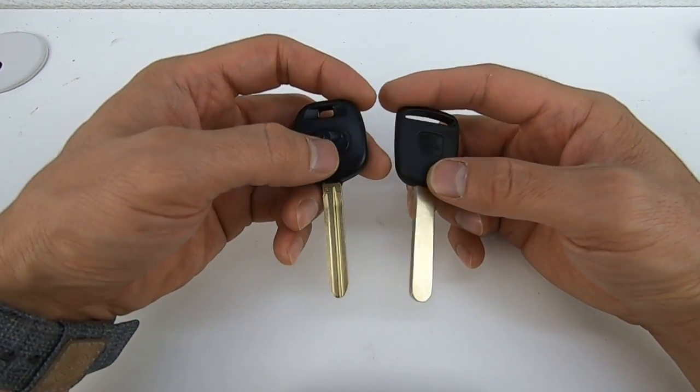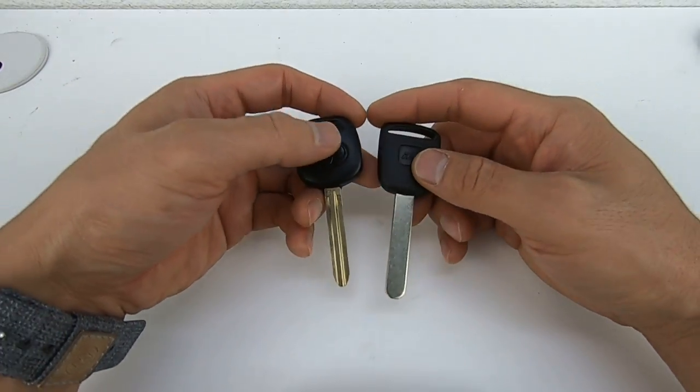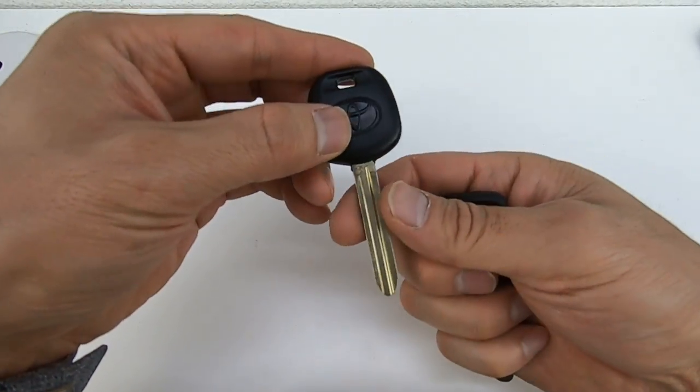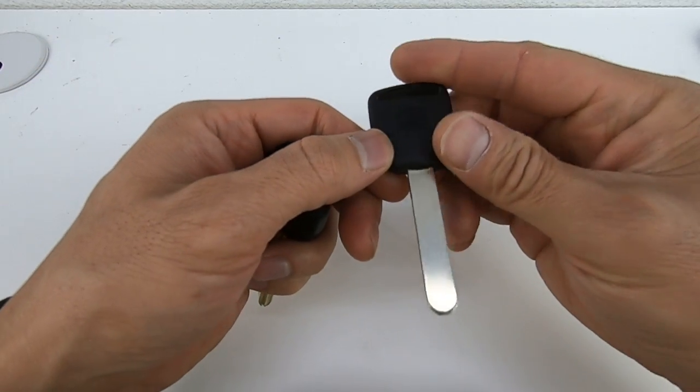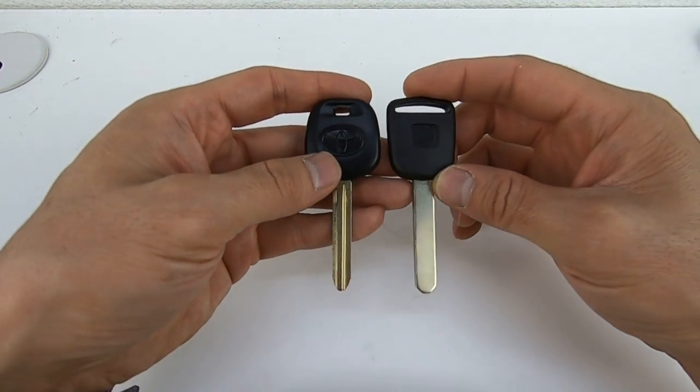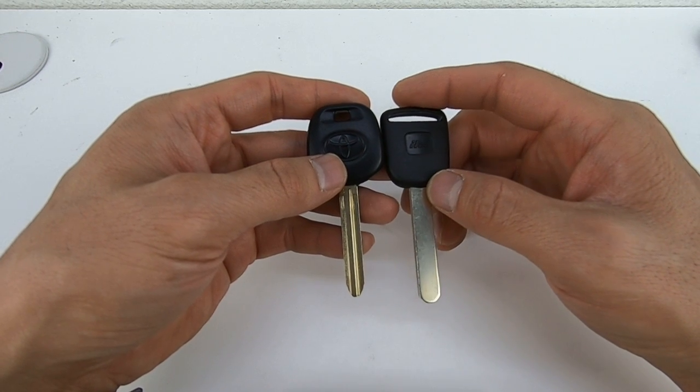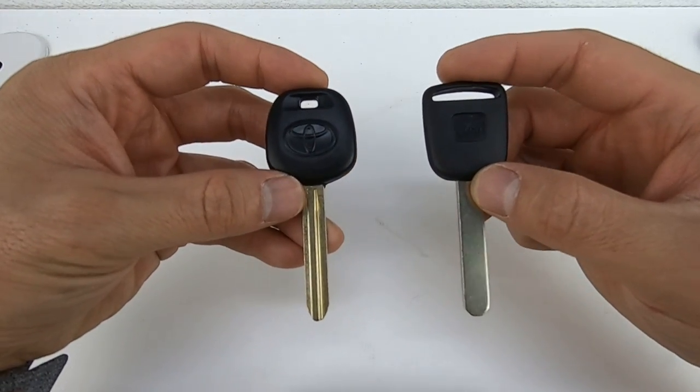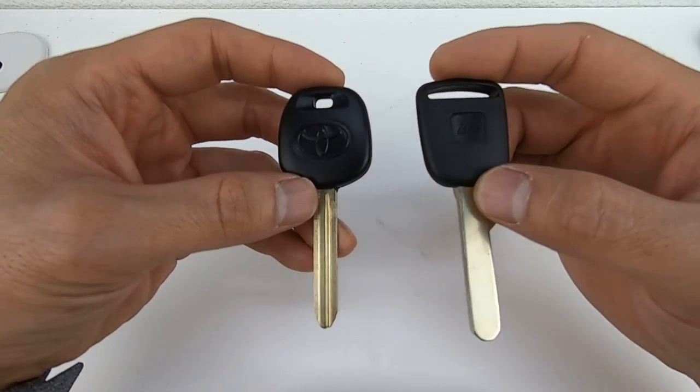Now if you notice, there's two types of keys here. This is an edge cut key, this one is a laser cut key. That is not different from the other key that I showed you with no chip, but these keys right here actually have a chip in it, or also something called a transponder.